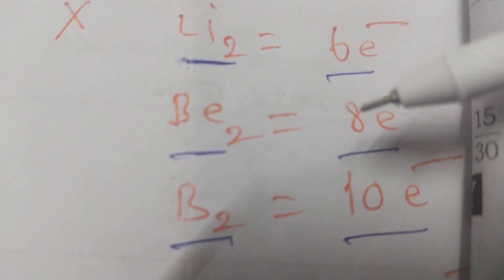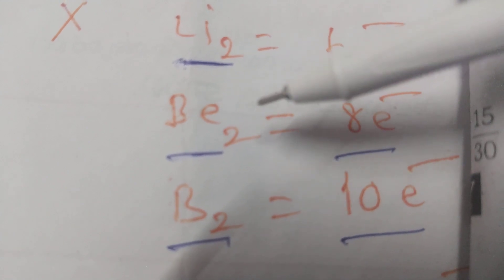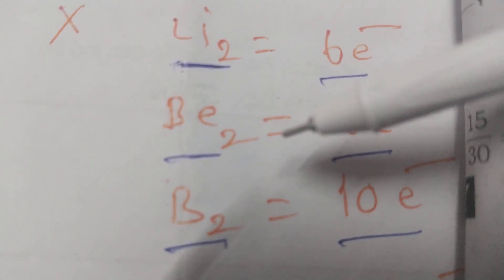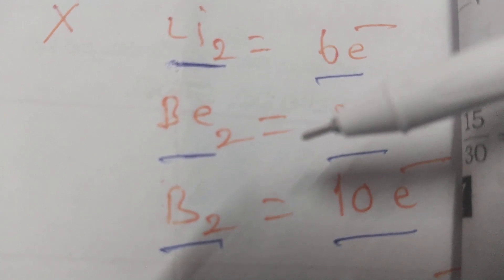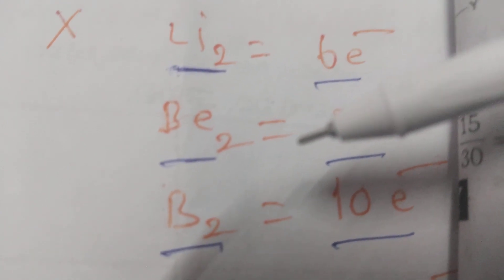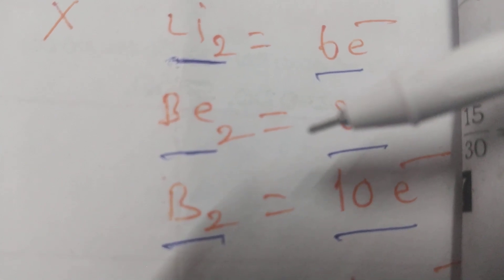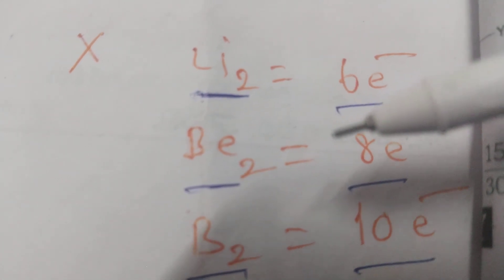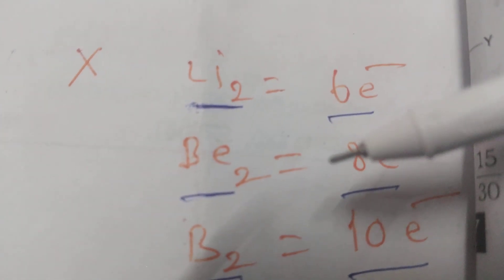Be-2 bond order 0, that indicates Be-2 does not exist. If any of the molecule bond order becomes 0, that molecule does not exist.